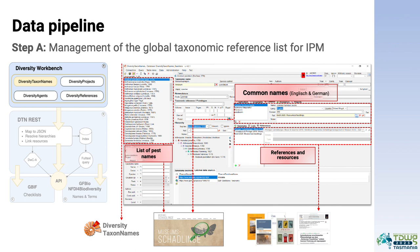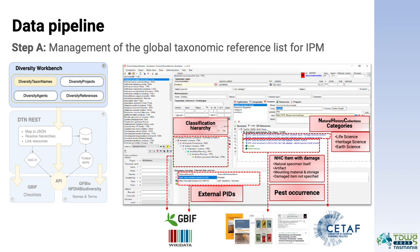Let's begin with the pipeline and the process of generating the list. The first stage, step A, relies on Diversity Workbench, which is a MySQL database for research and collection data management. This system was developed by the IT Center of the Bavarian Natural History Collections and consists of various modules. Four of these modules, in particular Diversity Taxon Names, play an important role in our pipeline. Basically, the first step consolidated the list of animals and fungi found in collections, originally sourced from museofchettling.de, a webpage established by one of our co-authors and based on Pinning and Collaborators 2016. This list was expanded with additional references, including common names in both English and German for the taxa.